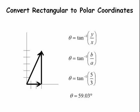Next, we calculate the angle. That is the arctangent of the rise over the run. In this case, the rise is 5, the run is 3. So we need the arctangent of 5 divided by 3, which is 59.03 degrees.